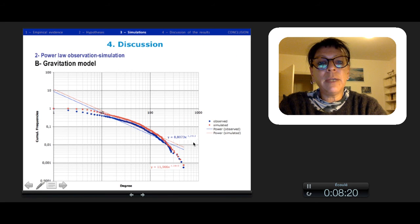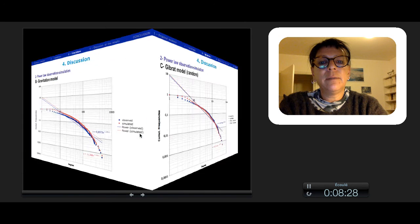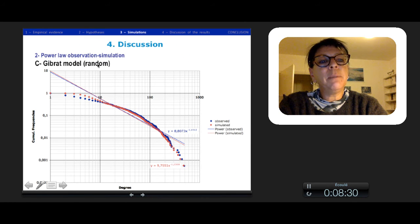For the gravitation model, there is a little bit more difference. The Gibrat model with random has almost more difference, which is much more, with a slope higher than expected.